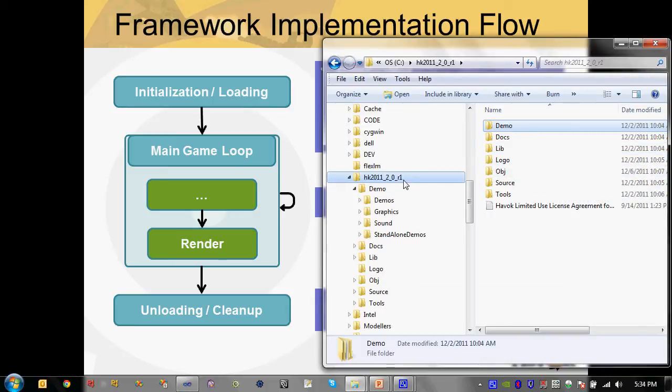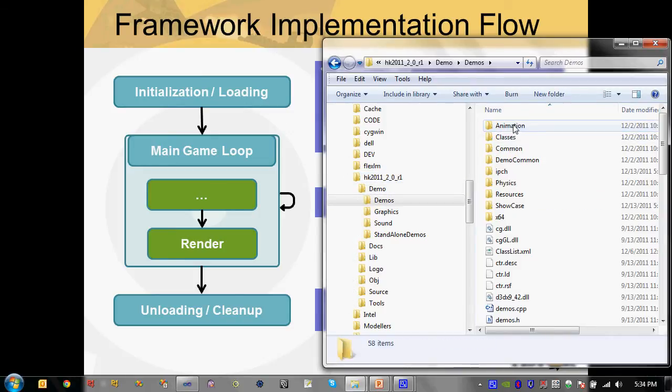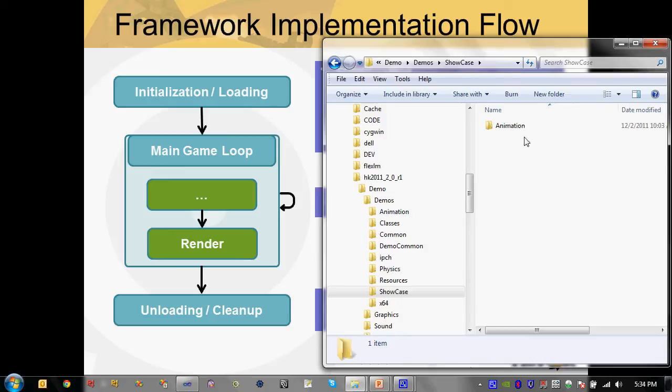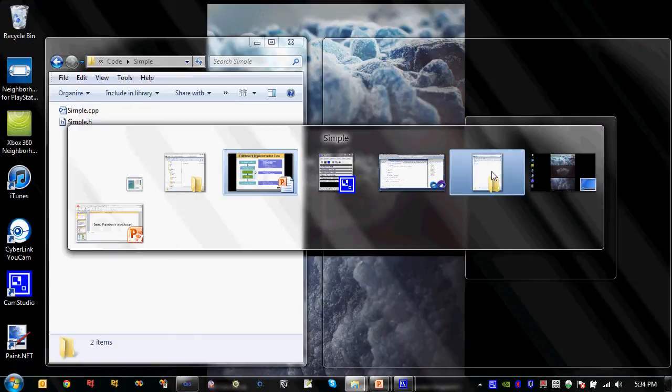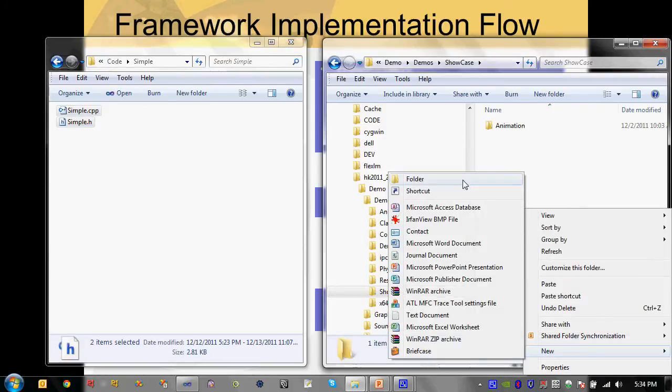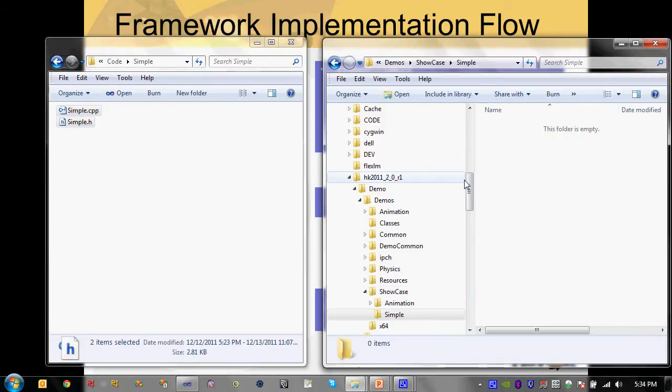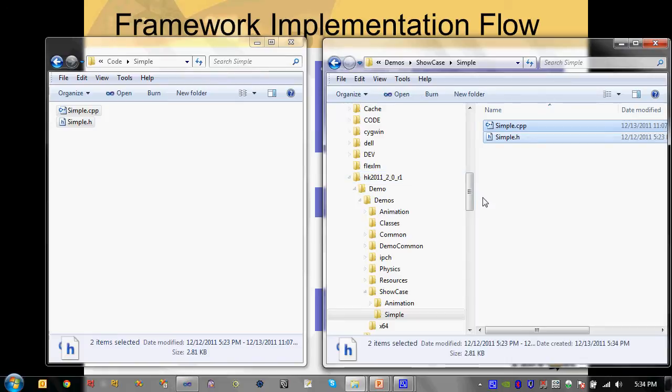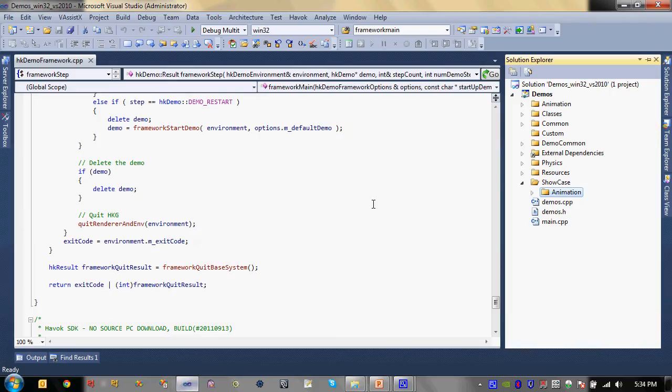I've already implemented a very simple demo offline. I'm going to show you how to get it into the demos project, compiling and running, and show you how the pieces all fit together. So let's switch over into Windows Explorer here. And here in the base folder of the Havoc SDK, let's go under demo, demos, and under showcase, we're going to create a new demo here. Let me just go over into my pre-existing simple demo here. And I have a source and a header file. I'm going to go ahead and copy these two files. And over in my Havoc SDK, let me create a simple folder here and paste those two files in here.